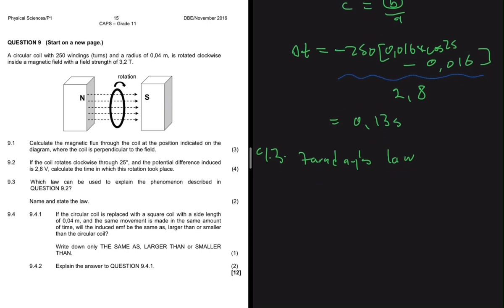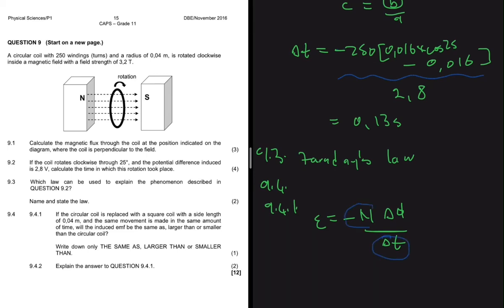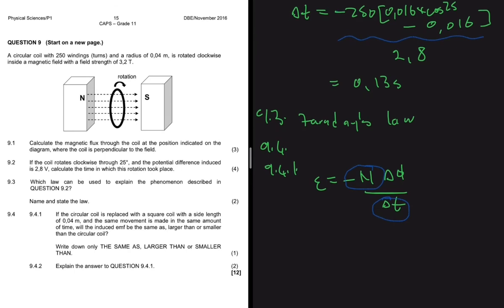Question 9.4.1: if the coil is replaced with a square coil with a side length of 0.04 meters, and the same movement is made in the same amount of time, will the induced EMF be the same, larger than, or smaller than that of the circular coil? The EMF formula is minus N times delta flux divided by delta t. Delta t and N remain the same — only the area changes.